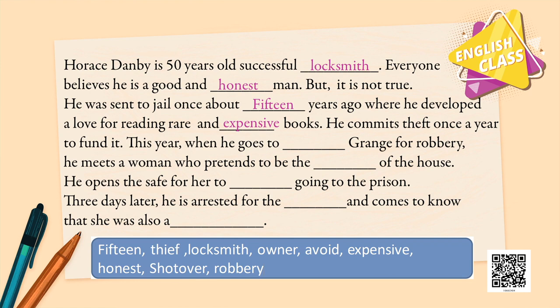This year he goes to Shotover Grange for robbery. He meets a woman who pretends to be the owner of the house. He opens the safe for her to avoid going to prison — he did not want to go to prison. Three days later he is arrested for the robbery and comes to know that she was also a thief.